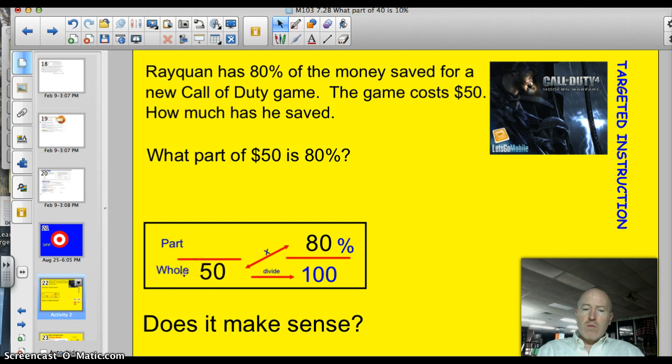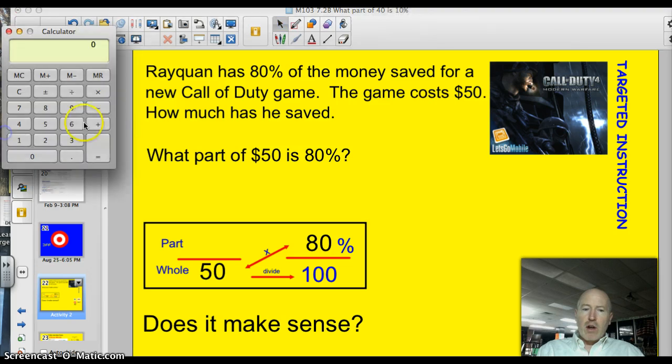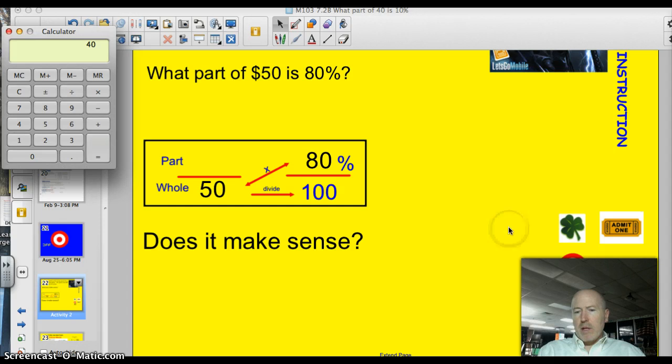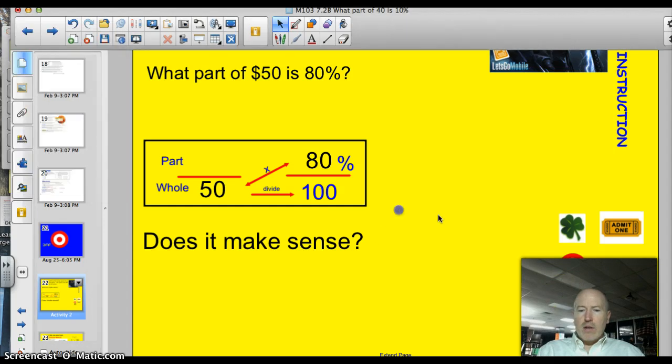We know that the $50 is what the whole price is. We know that he has 80%. So, let's get our calculator out and let's follow the directions. In the box, you will always multiply the diagonal numbers that you have. So, we've got 50 times 80 and that's going to give us a total of 4,000. Now, we'll divide that 4,000 by 100. We've got 40.